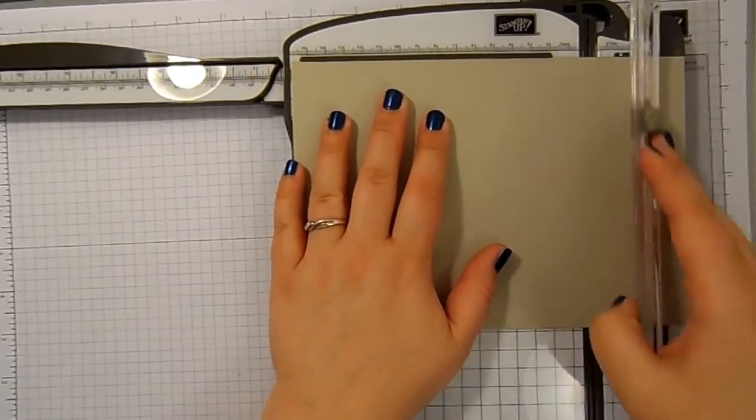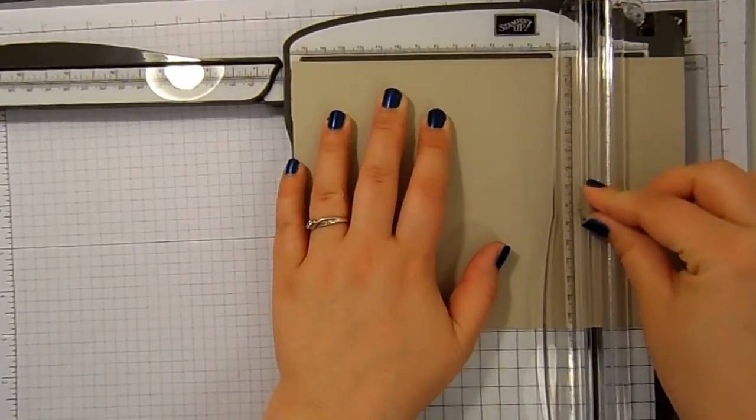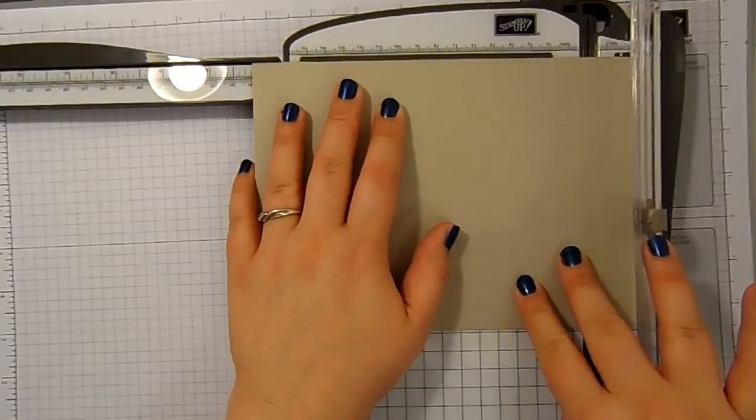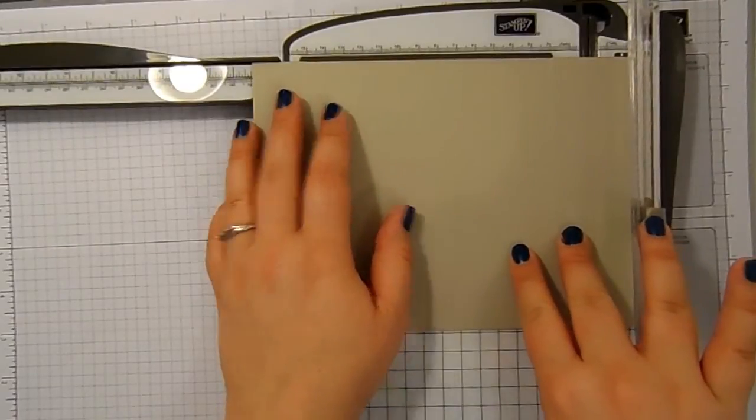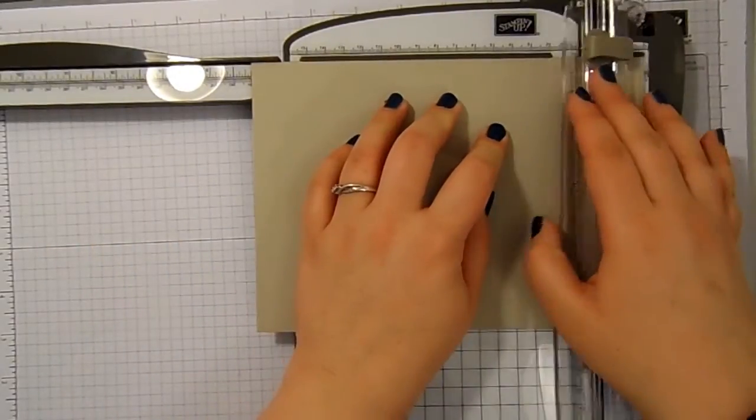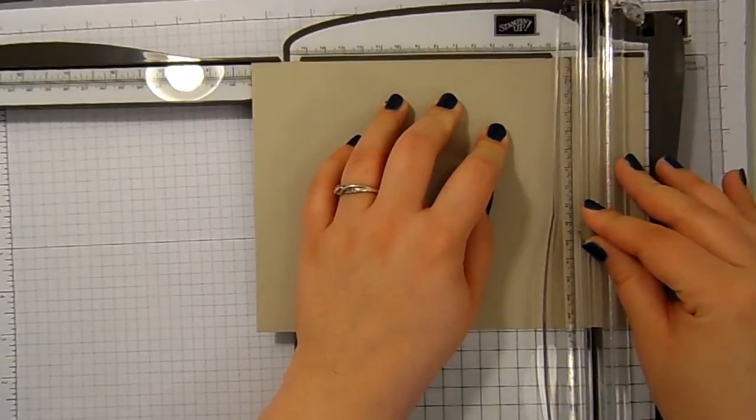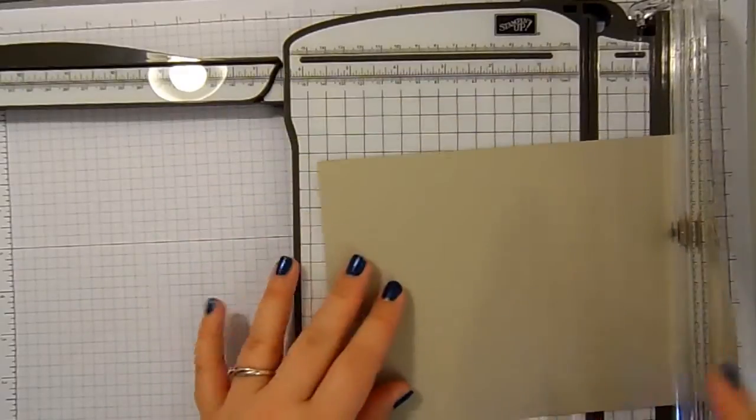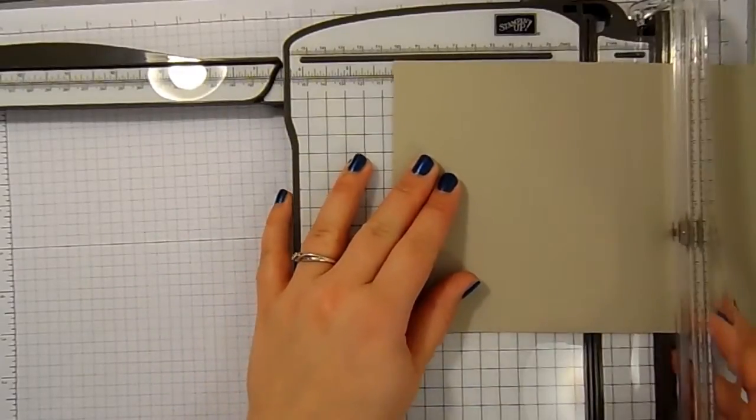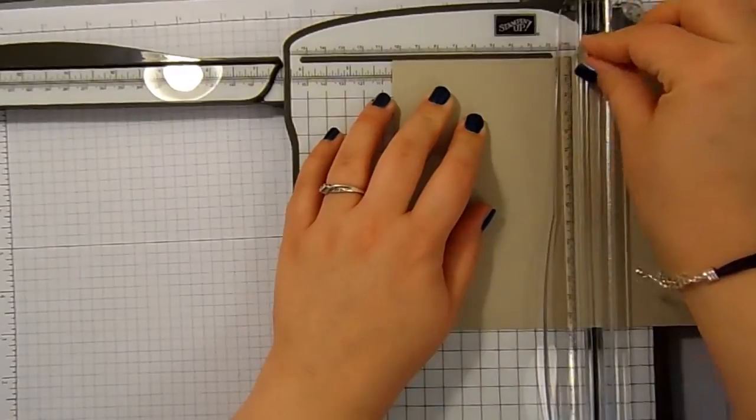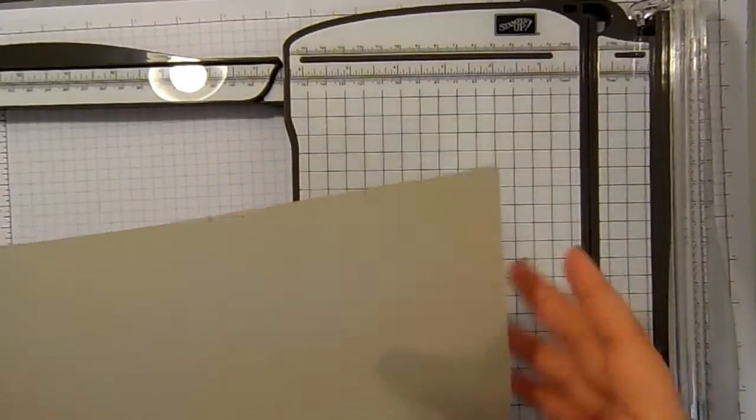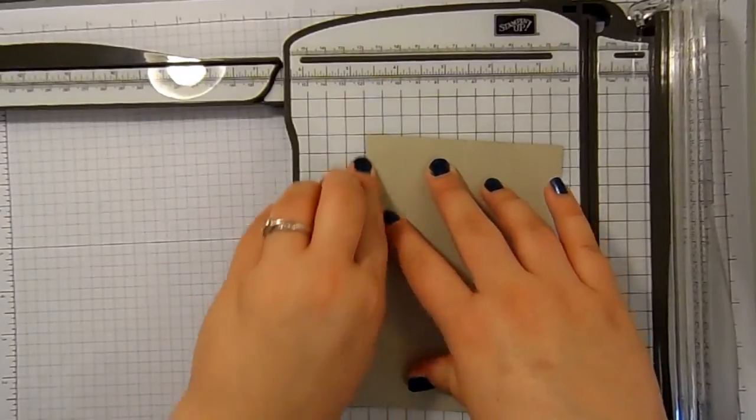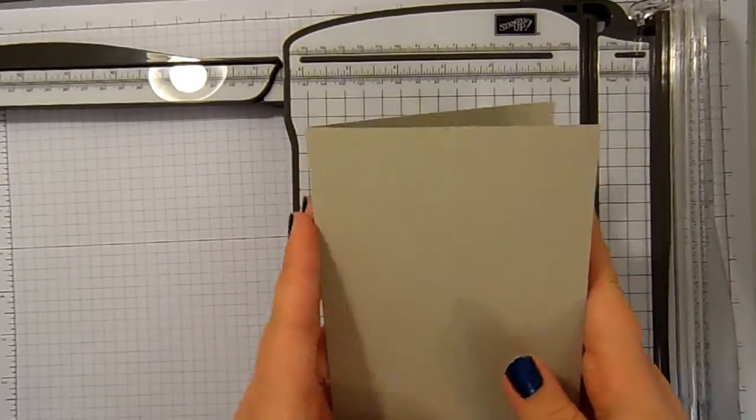6 and a quarter, again just down to that 2 inch score. 7 and one eighth, just down to that 2 inch score line. And then we're going to come back all the way along and we're going to score at 4 and an eighth all the way down because that's our halfway. If you fold your card in half along that 4 and an eighth score, you've got your standard card.